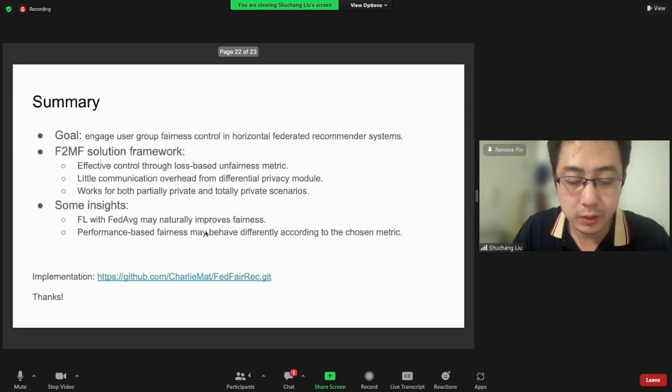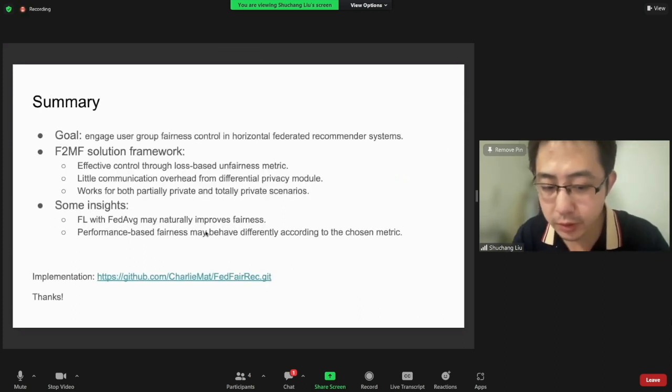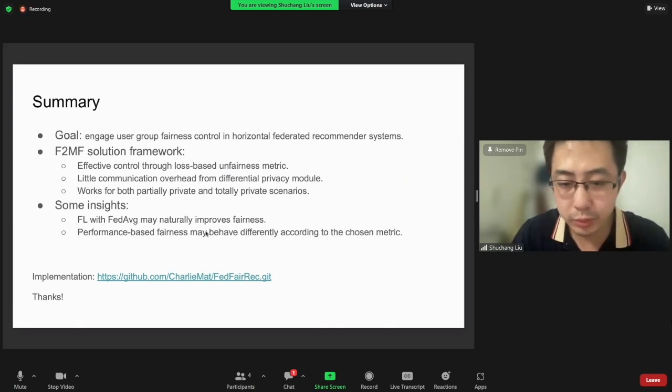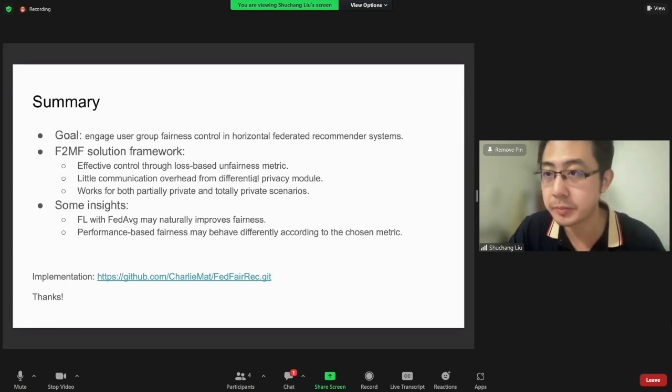As a summary, our work first formulates the user group fairness control problem in federated recommender systems and proposes an effective solution that is based on a loss-based fairness metric control. It also maintains user privacy through differential privacy modules. We have provided our implementation in the following link, so any comments or feedback will be welcome. Thanks for your time. That's my talk. Thank you.